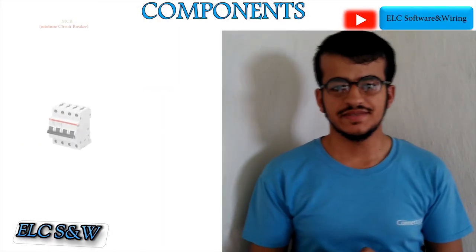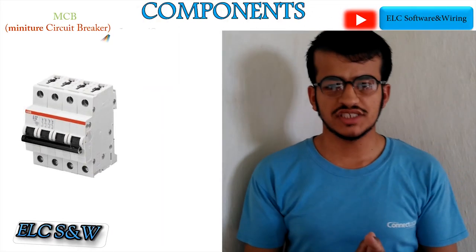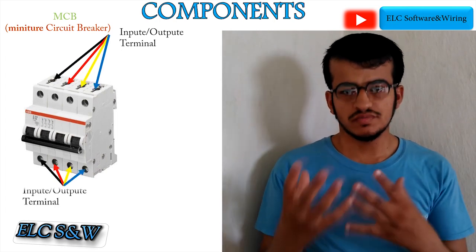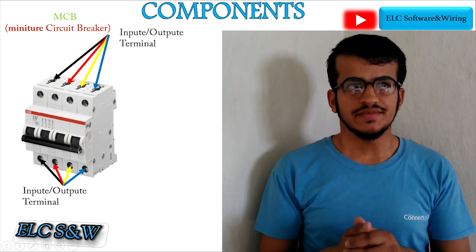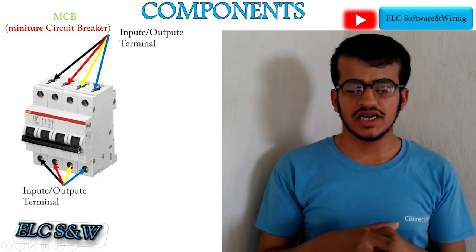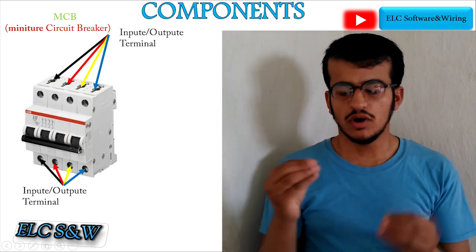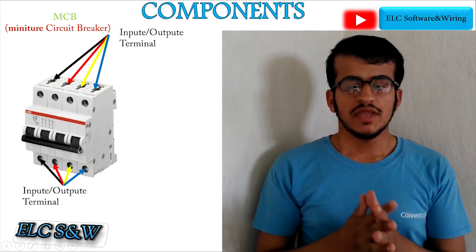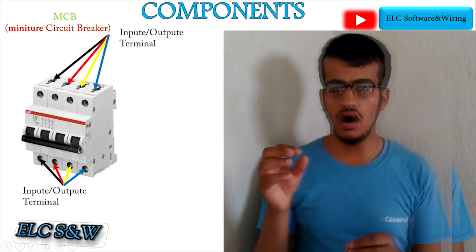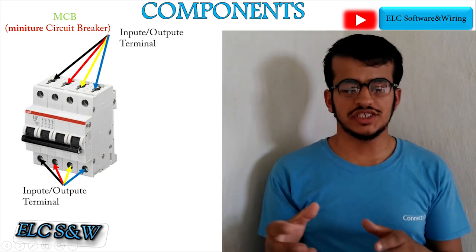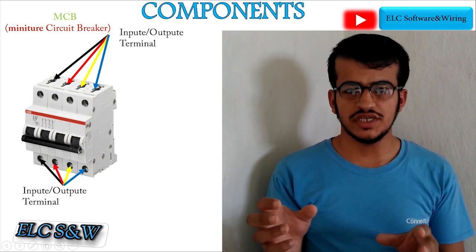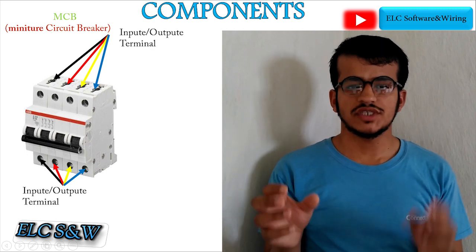Explained components. Number one: MCB, miniature circuit breaker. An MCB is an electro-mechanical device which is used to protect an electrical circuit from overcurrent. It can be operated manually and is used as an alternative to fuse switching in most circuits.